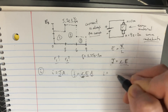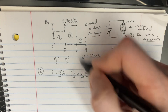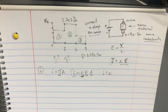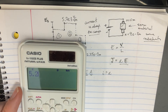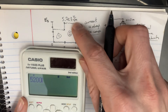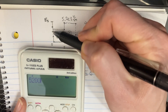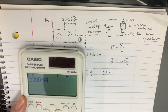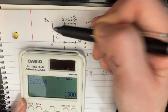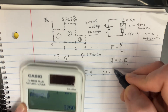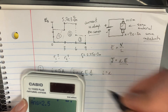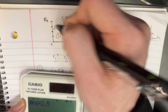Now we can use I equals σEA to solve this problem. For zone 1, the electric field value: we scale down from 5.2×10³ which is 5200. There are four notches, so dividing gives us a per-notch value, and we're at 2.5 notches, giving 3250 for the electric field in zone 1.